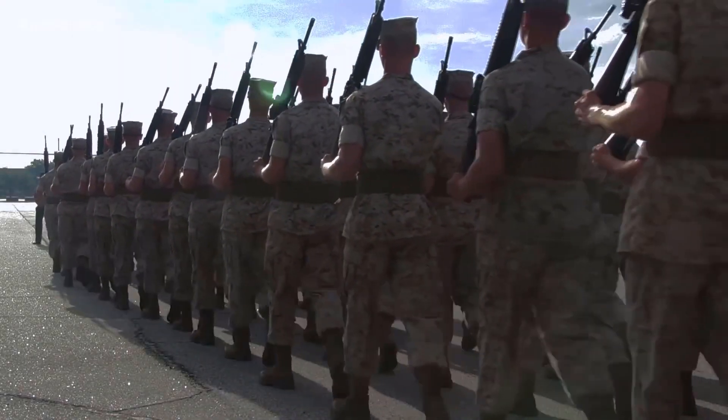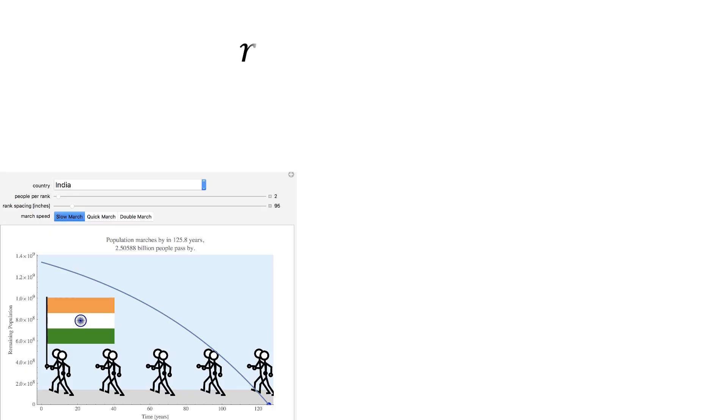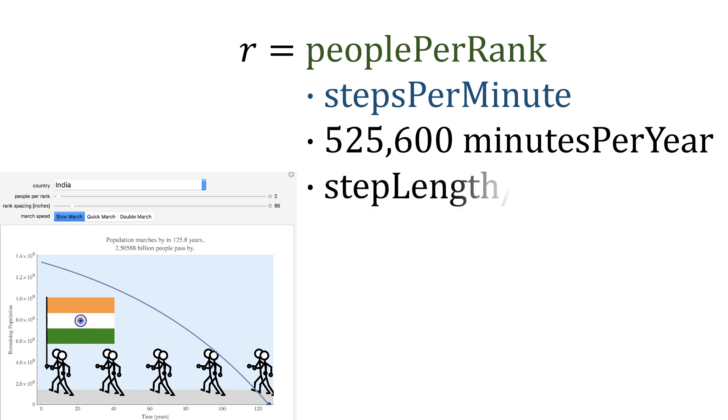Rank spacing in the U.S. military is 40 inches with a 30-inch step length. The number of people passing per year is thus the people per rank times the steps per minute times 525,600 minutes per year multiplied by the step length divided by the rank spacing.